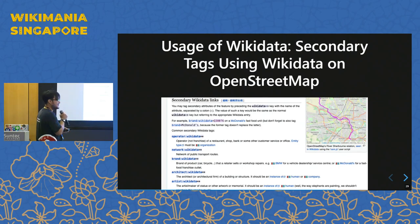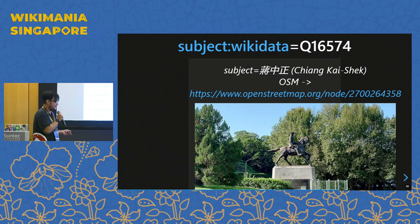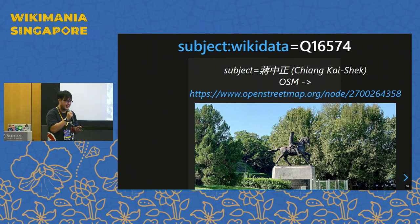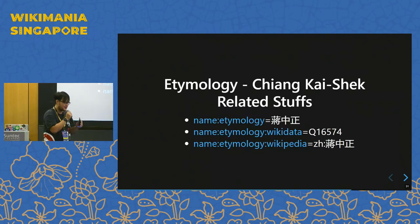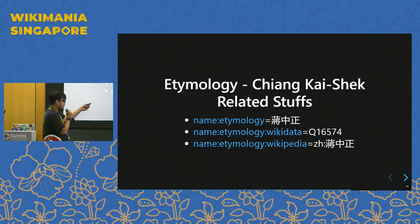OpenStreetMap uses quite a lot of Wikidata items. We use some secondary key-value pairs on OpenStreetMap to maintain datasets. Statues, for example, can also be linked in OpenStreetMap data using the secondary tag 'subject:wikidata' to note things like a Chiang Kai-shek statue or a Confucius statue. You can even trace the etymology of street names — there are so many Zhongzheng Roads in Taiwan, and you can link them to Wikidata by adding this secondary OpenStreetMap tag.